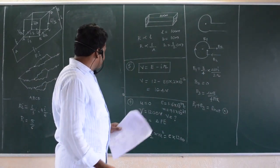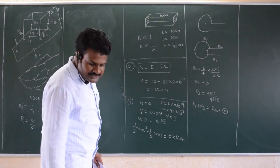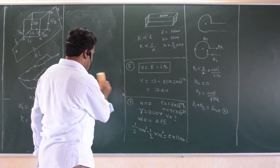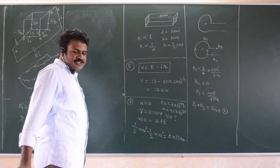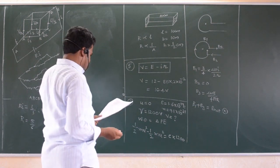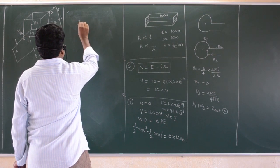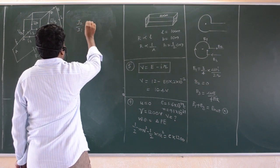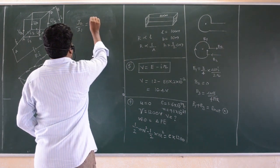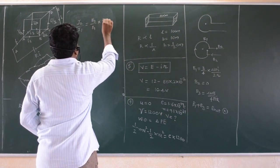Question number 14 is based on paramagnetism, that is Curie's law in magnetism and matter. Susceptibility is inversely proportional to absolute temperature. You can directly write I2 by I1 is equal to B2 by B1 into T2 by T1.